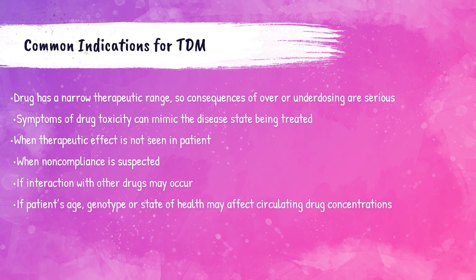So why might a physician request a TDM on a patient? Some medications have a very narrow therapeutic range, so for example, a medication with concentration slightly higher than the therapeutic range could have adverse effects. TDMs may also be ordered if the patient is on multiple medications that may interact with one another. Sometimes the pharmacological effect is not seen in the patient and the doctor will order a TDM to verify that the correct amount of medication is being prescribed. Also, some patients just may not be taking their prescription, and TDMs will show the physician if they are non-compliant with their medication.